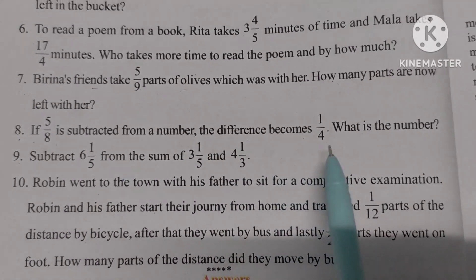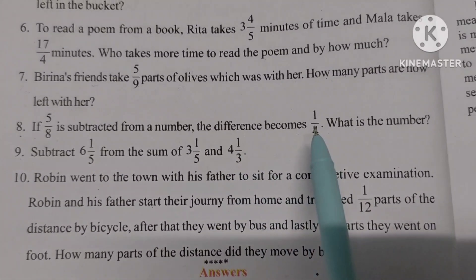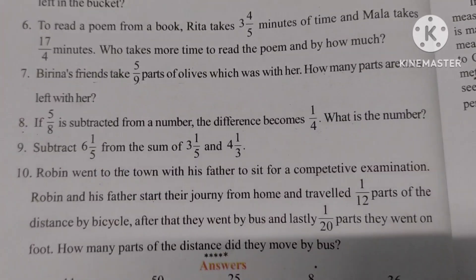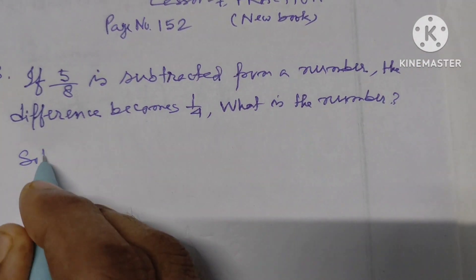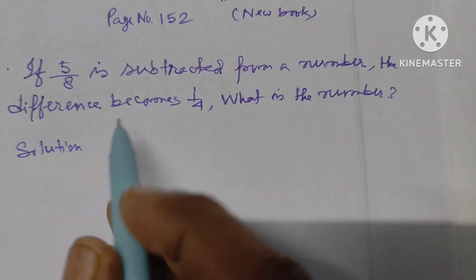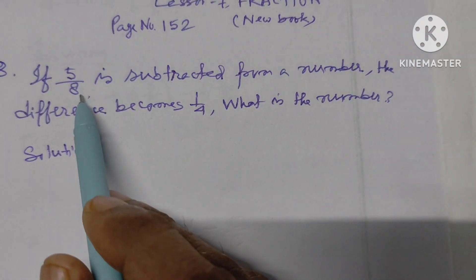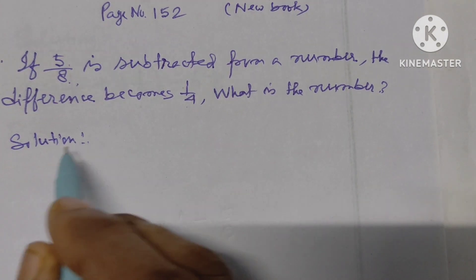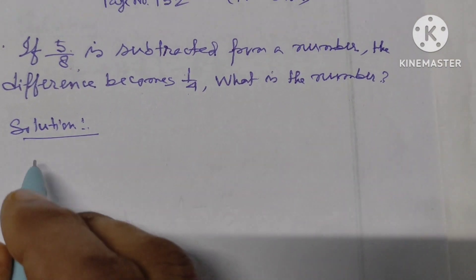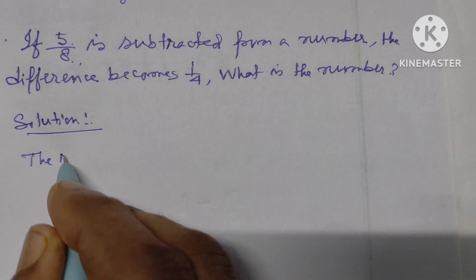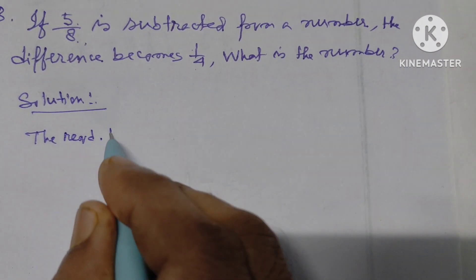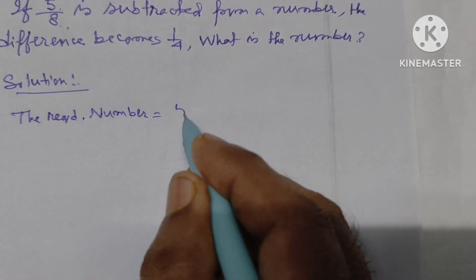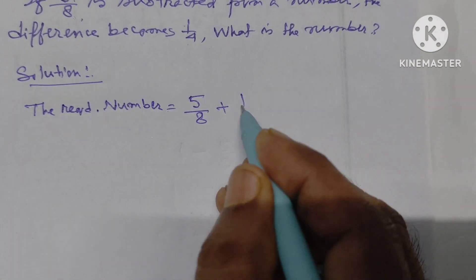The difference becomes 1 by 4. So what is the number? Solution: to find the required number, we have to add. The required number equals 5 by 8 plus 1 by 4.